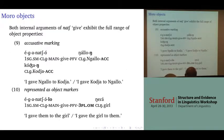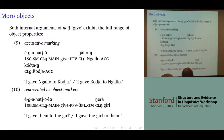Both internal objects of 'give' exhibit the full range of object behavior. Both of them can be accusative-marked, as in nine. In ten, either of them can be represented as an object marker. Notice that nine and ten are both ambiguous.